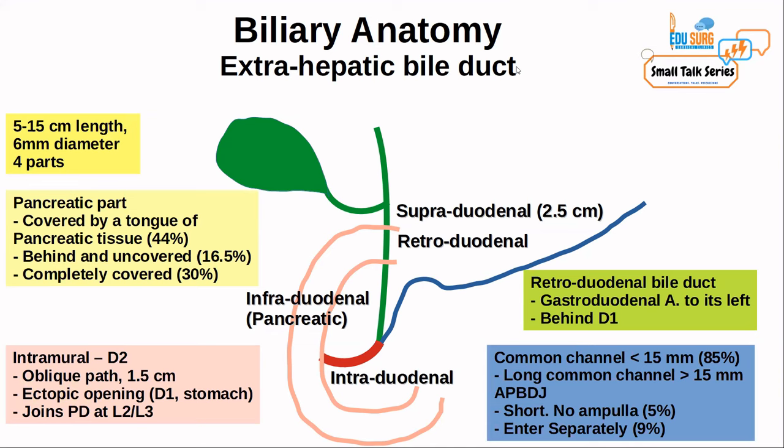The normal length of the common channel is less than 15 mm, seen in 85% of cases. If the common channel is longer, it can result in reflux of pancreatic juice into the biliary tree and predisposes to choledochal cyst as well as malignant transformation. This is the anomalous pancreaticobiliary ductal junction — APBDJ — with a long common channel greater than 15 mm. These are commonly asked exam questions, so memorize this slide completely.